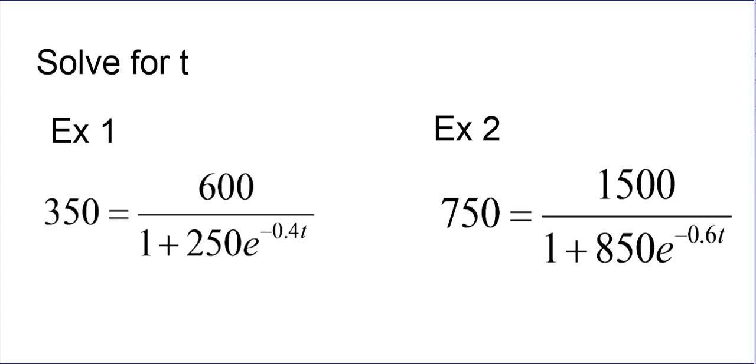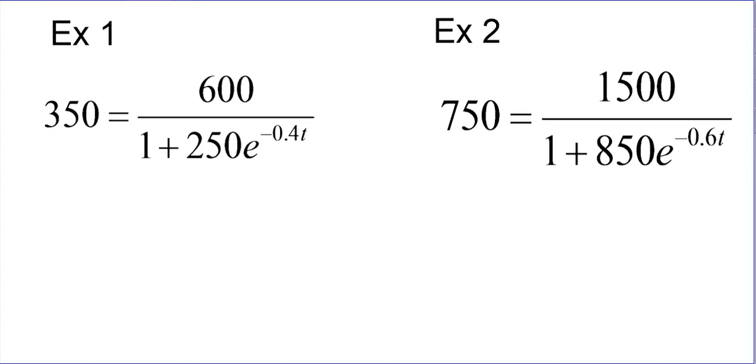What we have right here in our first example is a logistic equation. You see that we have a variable in the denominator and an exponent in the denominator as well. The first thing we want to do whenever we have a variable in the denominator that we want to solve for, in this case we want to solve for t, is we're going to multiply both sides by the denominator.